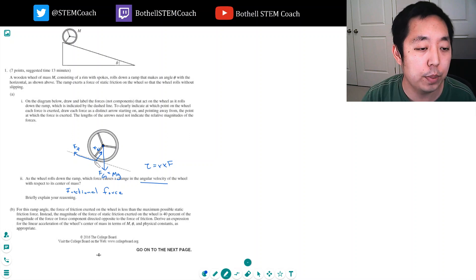The normal force is perpendicular to r, sorry, it's parallel to r. So when we do this cross product, it's zero. So only the force of friction is what's causing it to rotate.